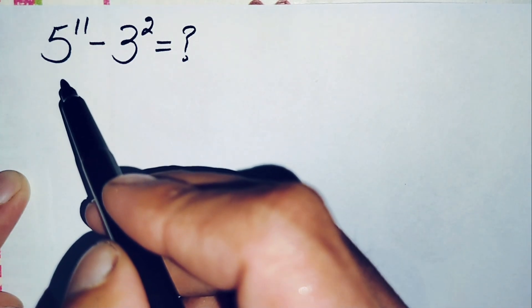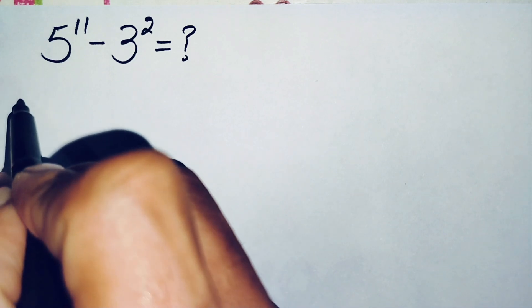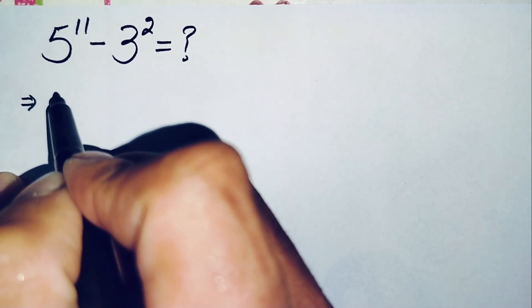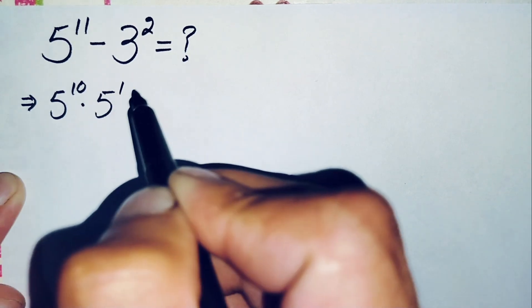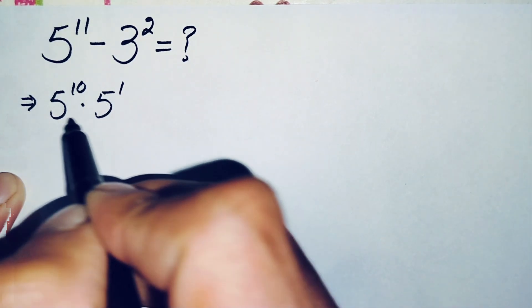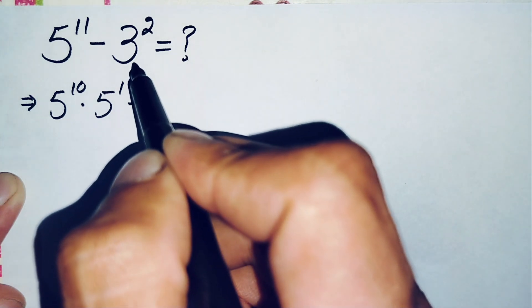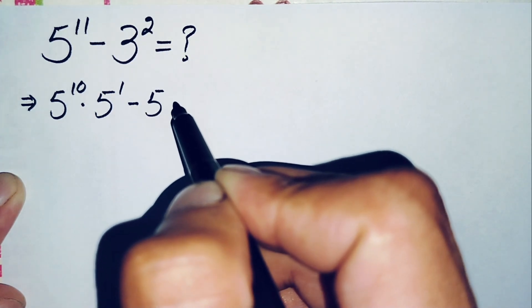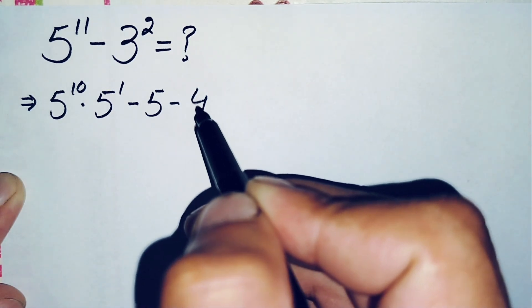So how can we solve this math problem? First of all, here we can write 5 raised to power 11 as 5 raised to power 10 times 5 raised to power 1. Multiplying these two gives 5 raised to power 11. Now here 3 squared is 9, so we can write minus 9 as minus 5 minus 4.